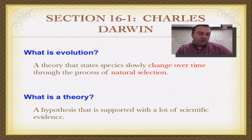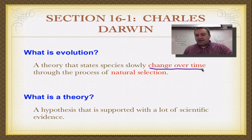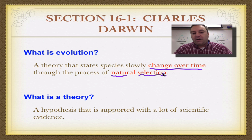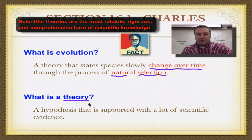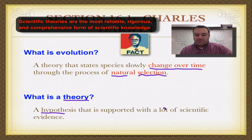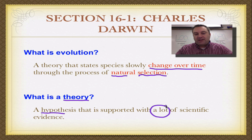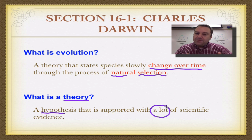Before we get into that, let's look at our definition of evolution. Evolution is simply known as a change over time, and this happens through a process of natural selection. We're going to learn about this in more detail in an upcoming screencast. When we talk about the theory of evolution, I want to focus on the word theory. The word theory is a very, very powerful word in the world of science. A theory is a hypothesis with a lot of scientific evidence — a ton of evidence. When we hear the word theory, that means something to a scientist. That means we've got a ton of data and evidence to back this up.